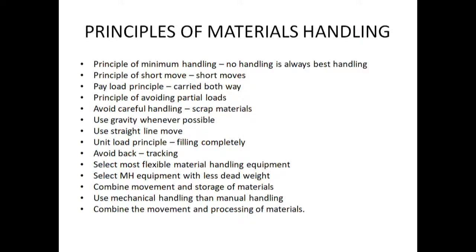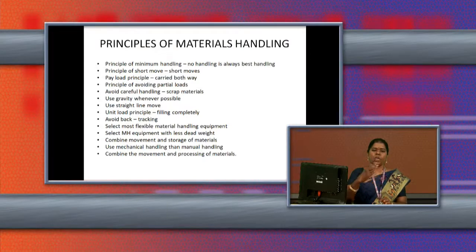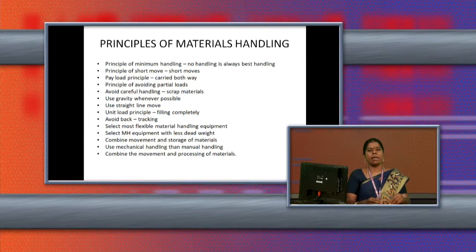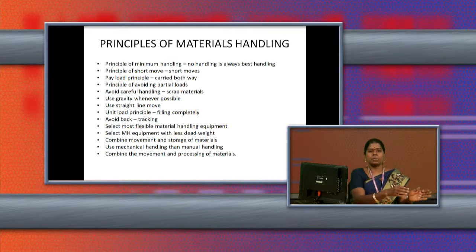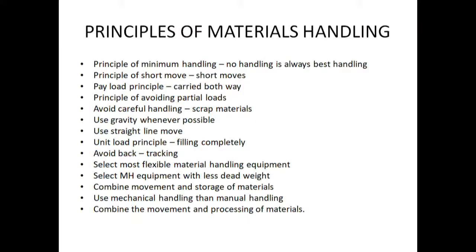The next principle is the principle of short move. We should not carry the raw material for a long distance — it has to be moved over a short distance. For that, we can locate our warehouse or godown nearer to the production place. If the godown is near the production area, it is easy to take the raw material. Taking it a long way wastes time, cost, and effort.